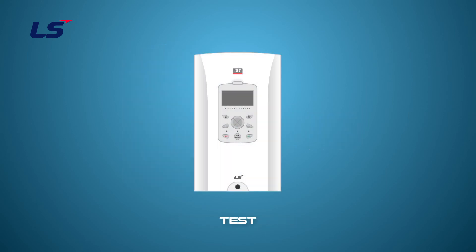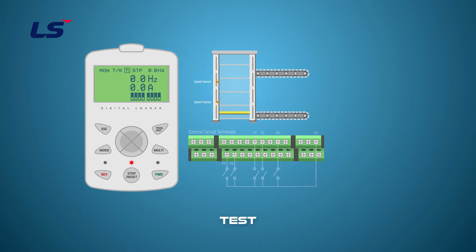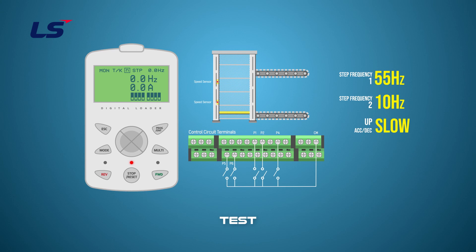Let's look at the sequence of the lift load according to the input status with a multi-step test. The rising motion is operated by forward operation, and the falling motion is operated by reverse operation. Step 1 of multi-step frequency is 55 Hz and step 2 is 10 Hz respectively. When the lift rises, we will apply the normal acceleration and deceleration time set by DRV3 and DRV4. When the lift falls, we will apply step 1 of multi-step accelerate-decelerate. The lift works by terminal inputs shown on the screen.